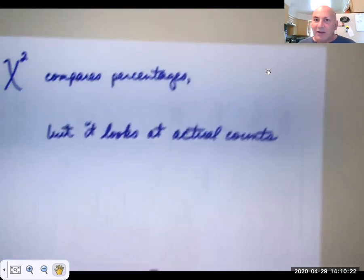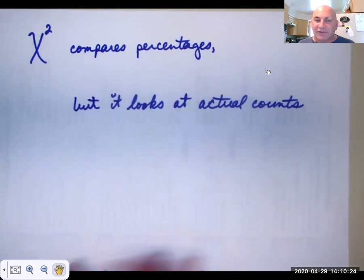Now you might be asking what that means. We'll talk about it in a moment. Now, interestingly enough, the chi-squared test compares percentages. Again, we're talking relative frequency. But it looks at actual counts. So let's take a look at a problem in the current textbook we're using. It's on page 527.